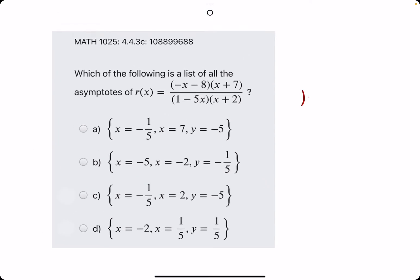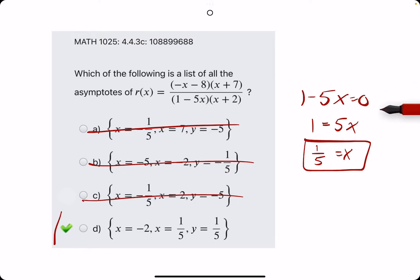So starting with this one, we're going to set the denominator factors equal to zero. And we will solve for x. So we have one-fifth. We can eliminate any that don't have one-fifth equal to x. And just like that, we see that our answer is D.